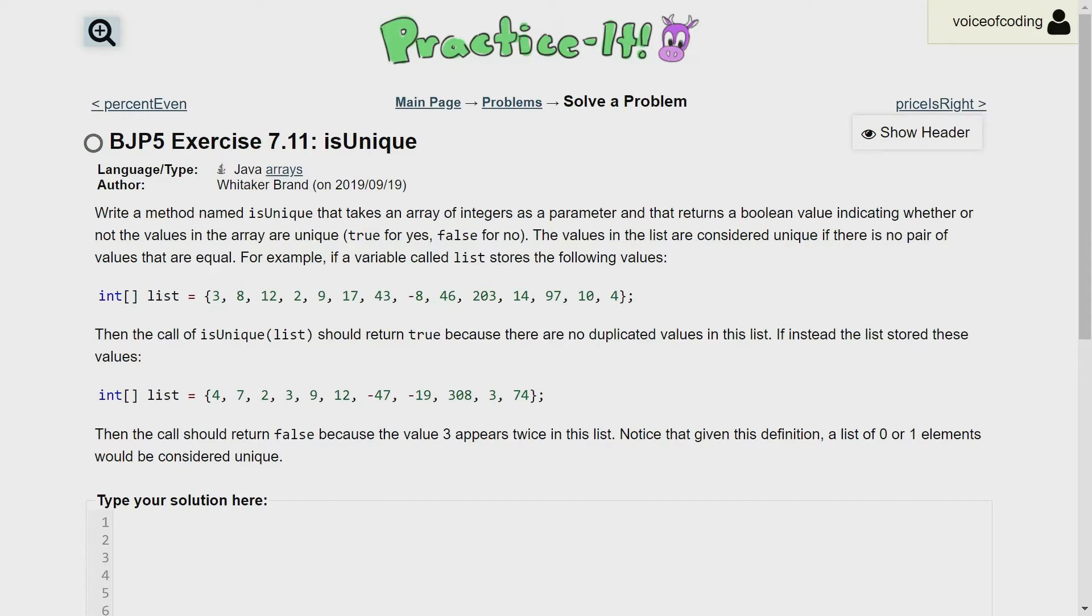The problem reads: write a method named isUnique that takes an array of integers as a parameter and returns a boolean value indicating whether or not the values in the array are unique. True for yes, false for no. The values in the list are considered unique if there is no pair of values that are equal.